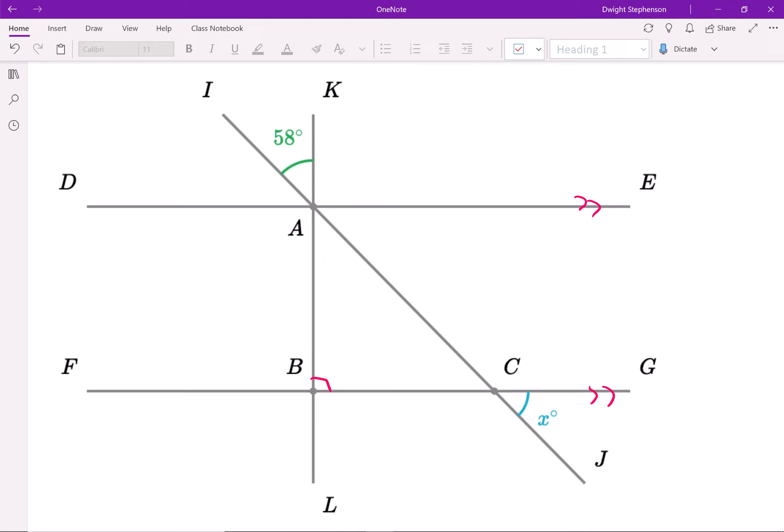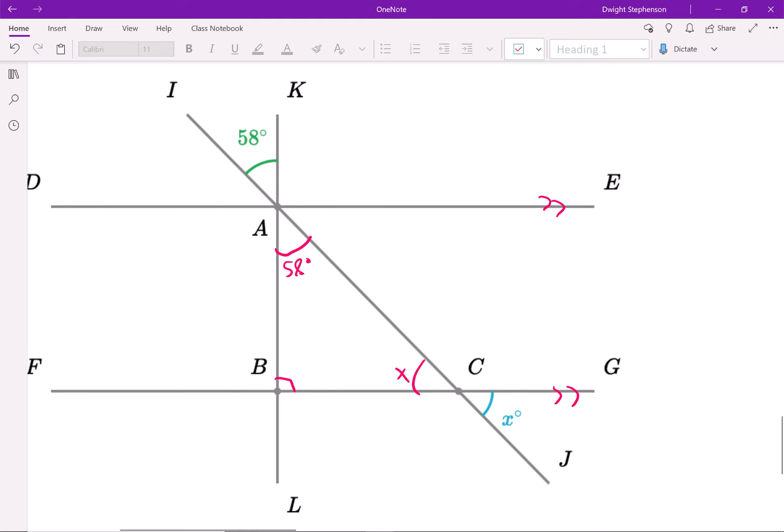We know that that's 58. So we can go through and we're trying to figure out what x is. So we could show that this is also 58 because there are vertical angles. We could show that this one is x, vertical angle with x. And then we know that the sum of angles in a triangle is 180.